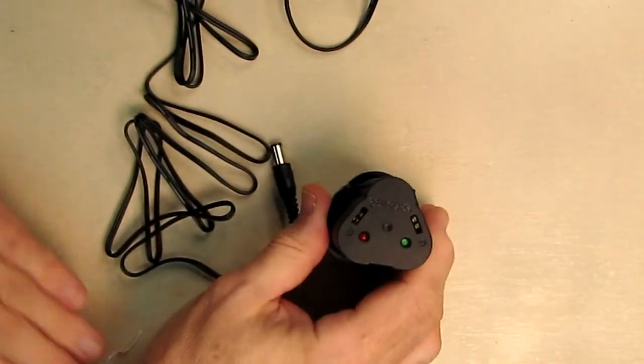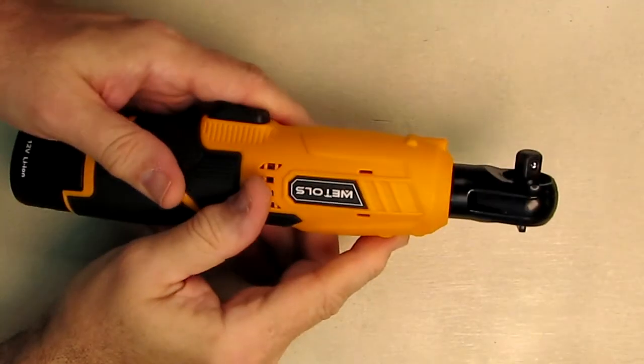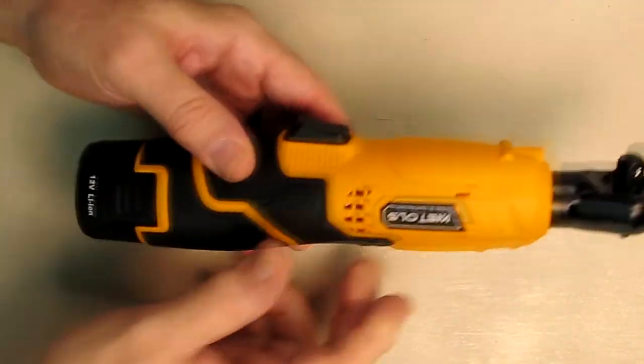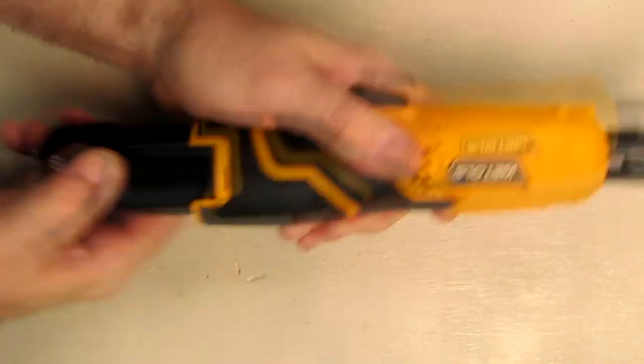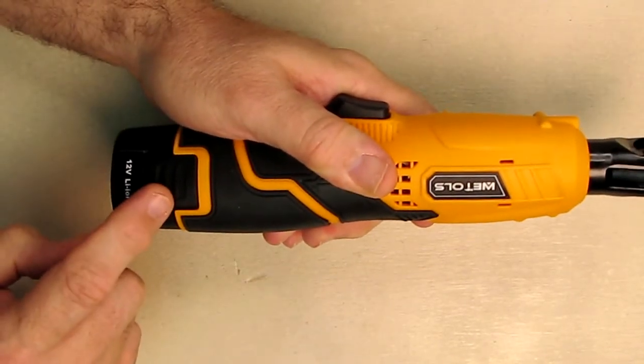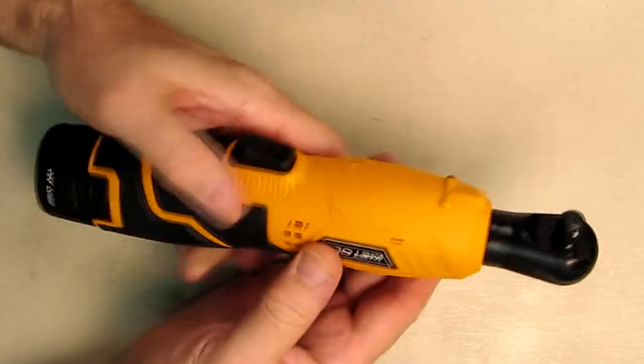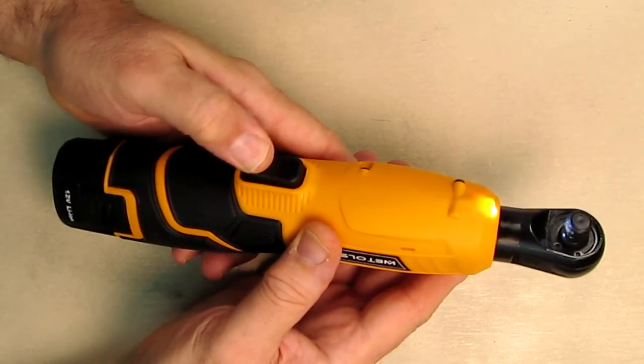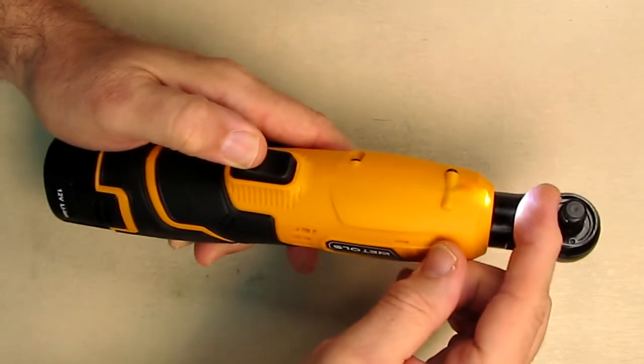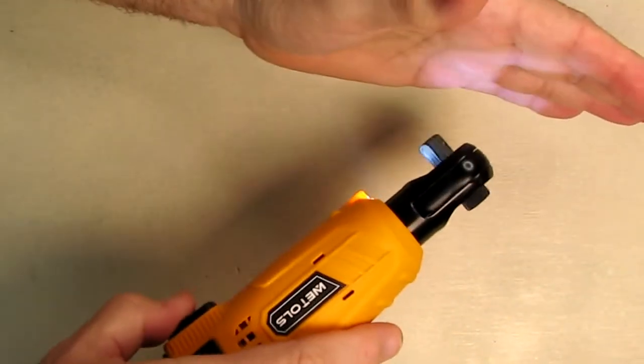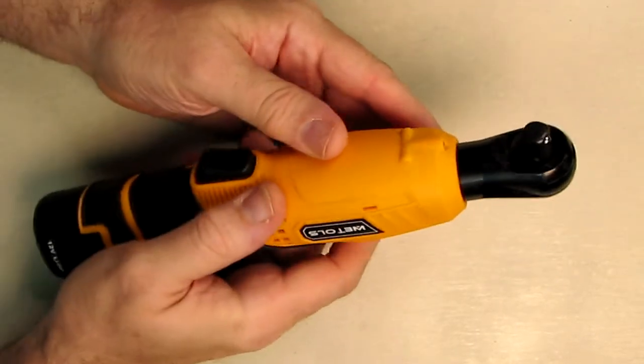Let's take a look at the wrench itself. The battery is removable just like that—it only goes in one way and it locks. You just compress those right there. Then you have your button right here. You see it comes on and it also has an LED right there that points to what you're working on. That's a nice touch, helps you see.